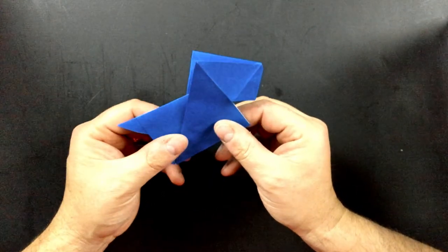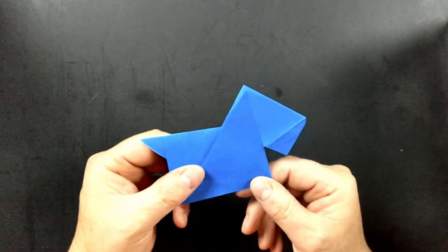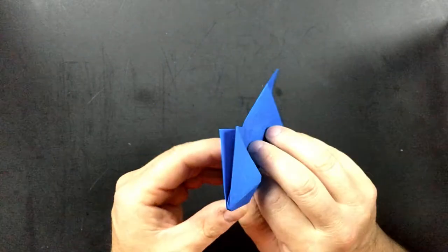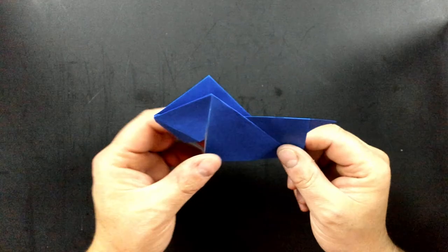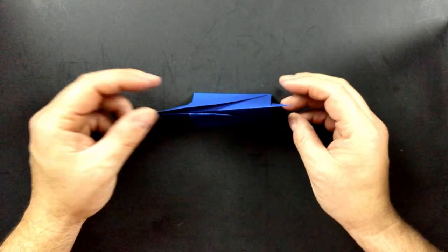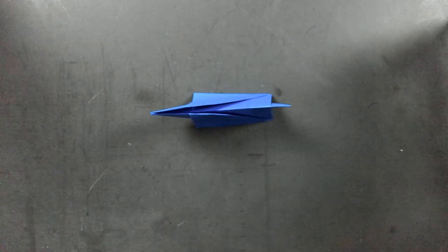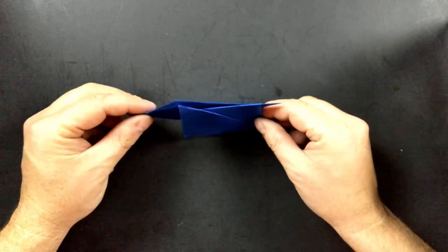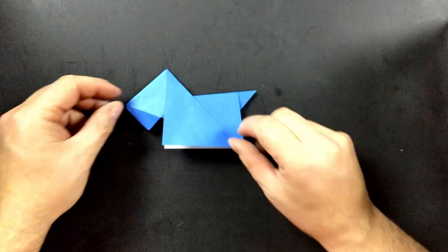And that becomes the head of your Scotty dog. So here you can see it this side. And then here's the other side. And if you've done it right, your dog should stand up for you. But there it is.